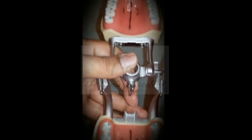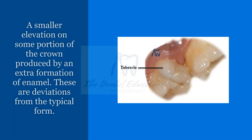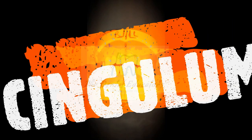The second landmark is the tubercle. A tubercle is defined as a smaller elevation on some portion of the crown, produced by an extra formation of enamel. These are atypical structures — deviations from the typical form. A tubercle is marked on the second maxillary molar as an example.